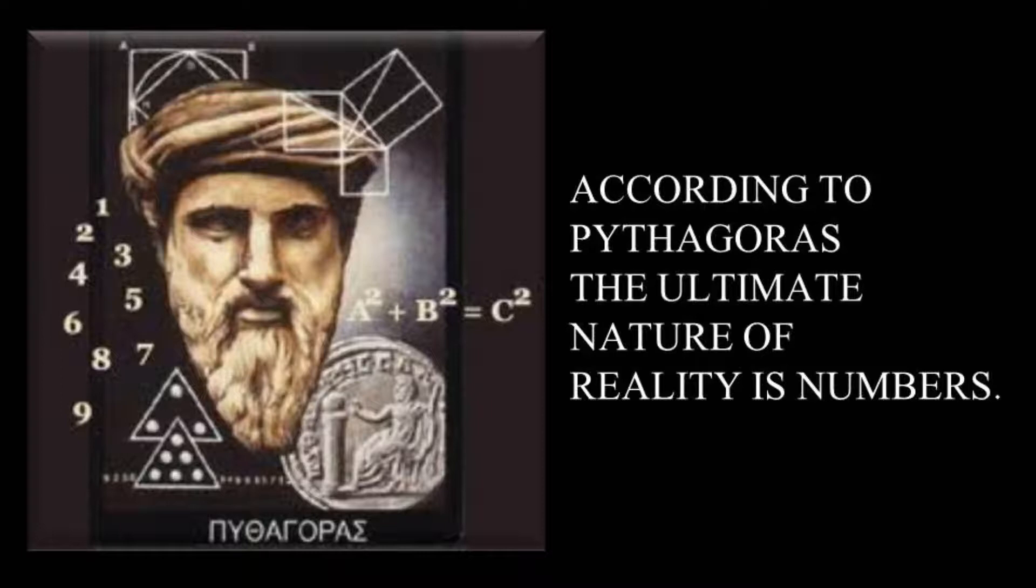And since they believed that 10 was the perfect number, they also believed in 10 heavenly bodies: the five planets, the sun, the moon, the earth, and a mysterious and invisible counter-earth. They may well have invented this counter-earth to make the celestial numbers add up to 10. All of these revolved around a central fire.